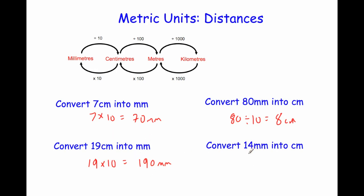And finally: convert 14 millimeters into centimeters. To change from millimeters into centimeters we divide by 10. So we do 14 divided by 10, which means we move the digits one place to the right, giving us 1.4 centimeters. That makes sense because one centimeter is 10 millimeters, so 14 millimeters would be 1.4 centimeters.